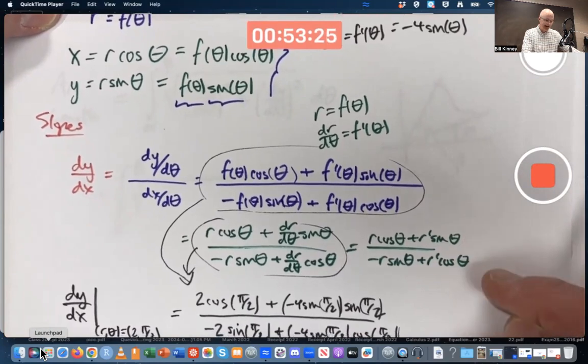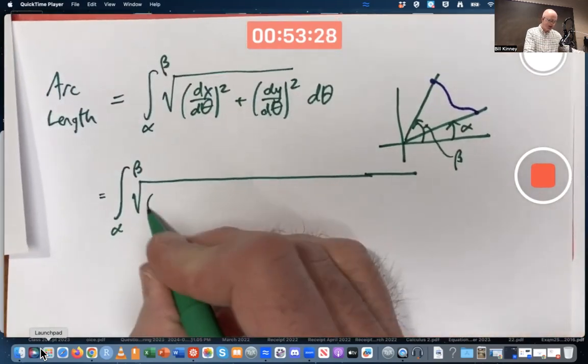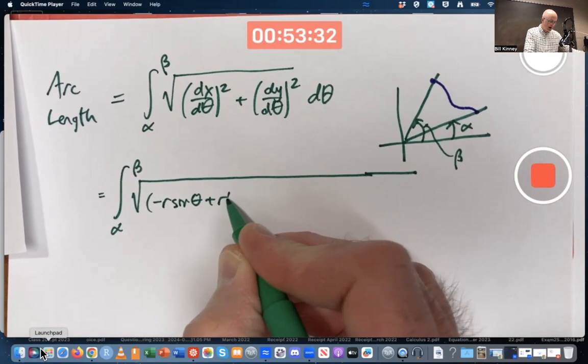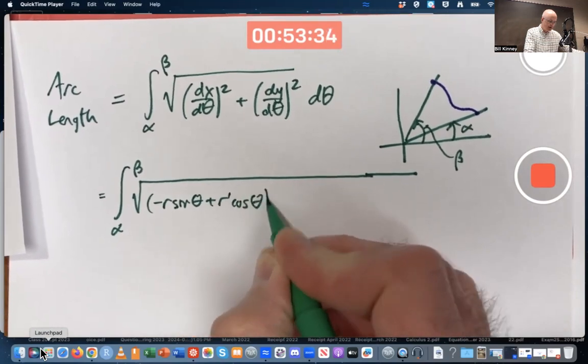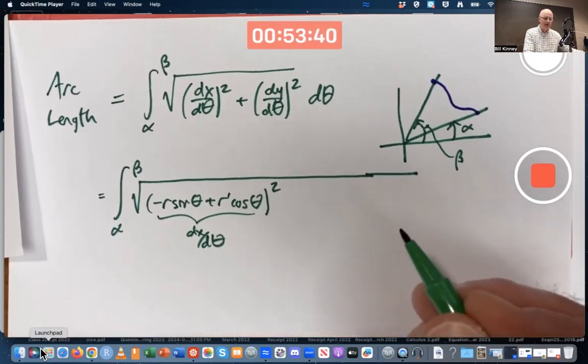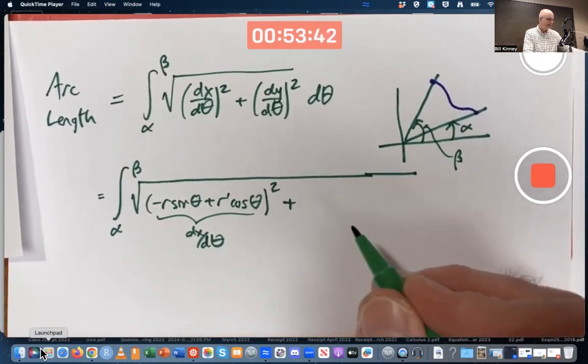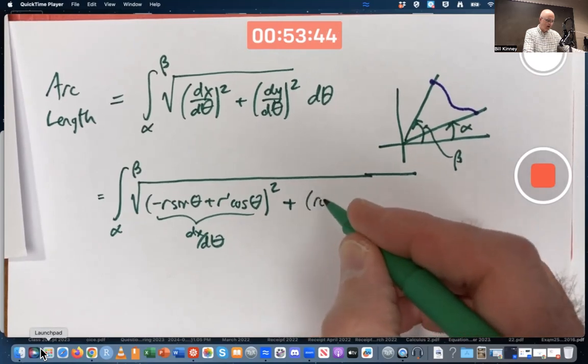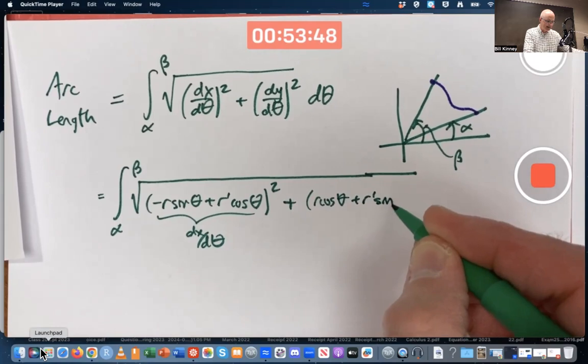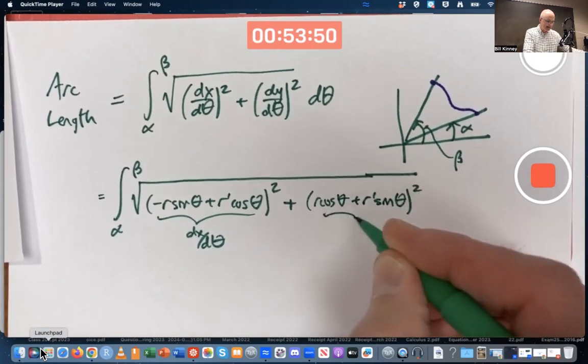dx/dθ is the bottom thing. Negative r sin θ plus r' cos θ. That is dx/dθ. dy/dθ was r cos θ plus r' sin θ. That's dy/dθ.